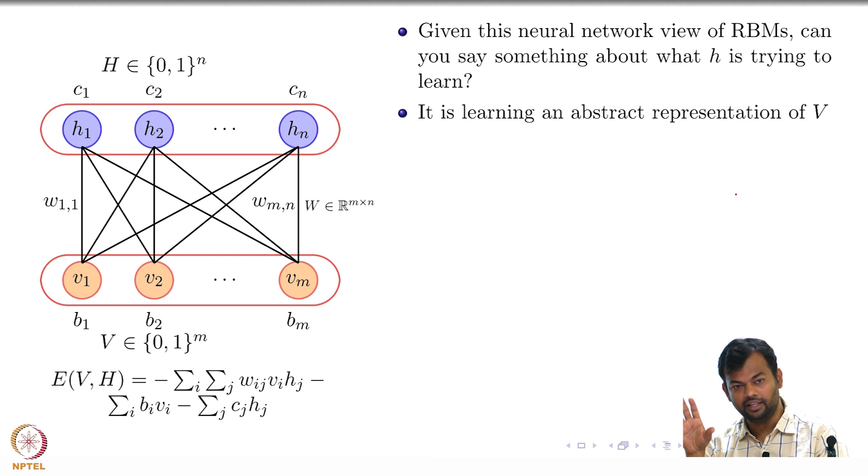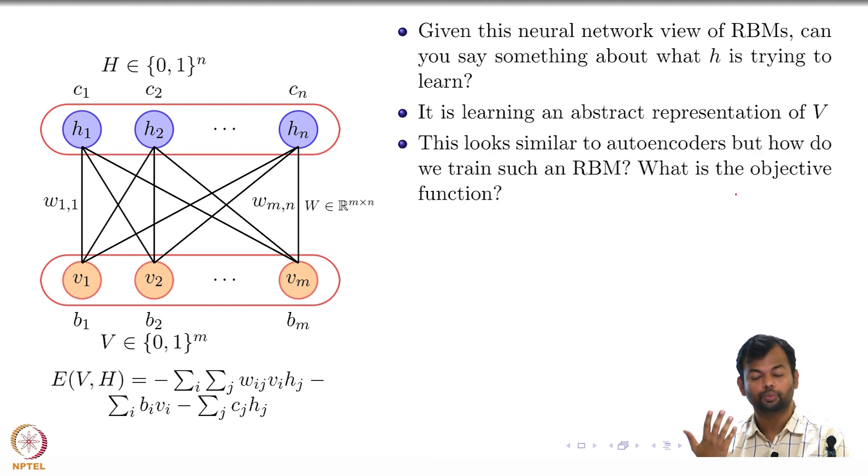In the case of autoencoders what was our training data? Just x, right? Just the visible variables, no hidden variables of course and no y's also. In the case of RBMs what's our training data? Same as what we have in autoencoder. Just the visible units. We don't have labels associated with them, and of course hidden variables are always out of the question, right? Even those are our imagination, no one is going to give us that. So hence we are comparing this to an autoencoder.